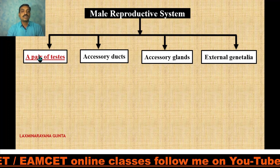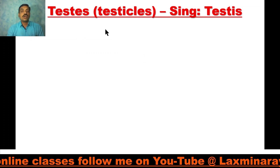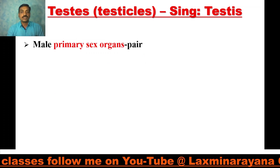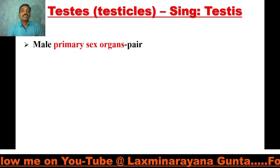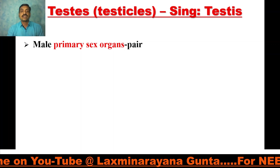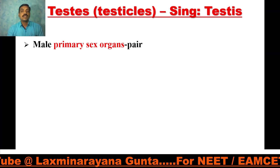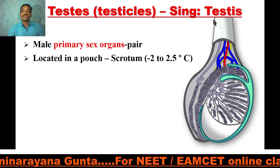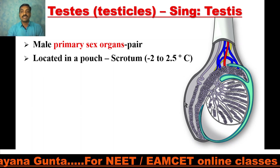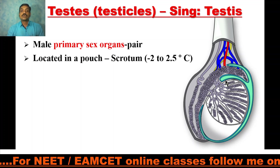First of all let us discuss the testes. A pair of testes, also called as testicles, are oval pinkish structures present in a sac-like structure. These are the primary sex organs of males. The pouch-like structure where these testes are located is called as the scrotum.